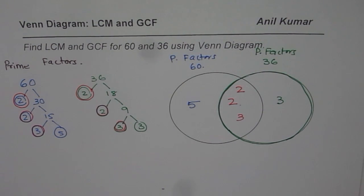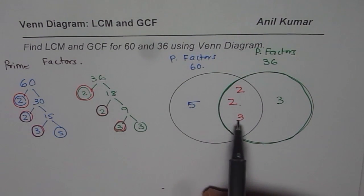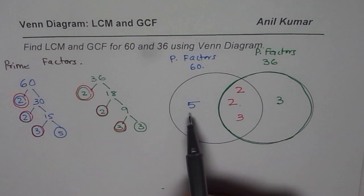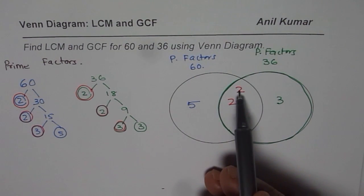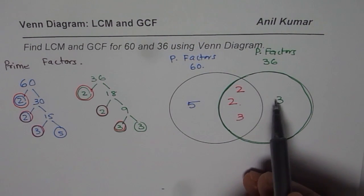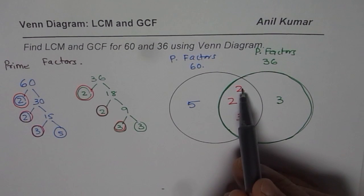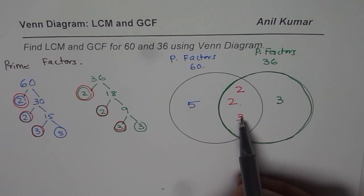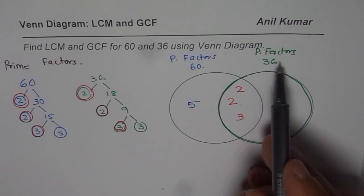Now it is a good time to check. If I multiply 5 with all these numbers, do I get 60? 5 times 2 is 10, 10 times 2 is 20, 20 times 3 is 60, perfect. 3 times 2 is 6, 6 times 2 is 12, 12 times 3 is 36. Done. So that is correct.